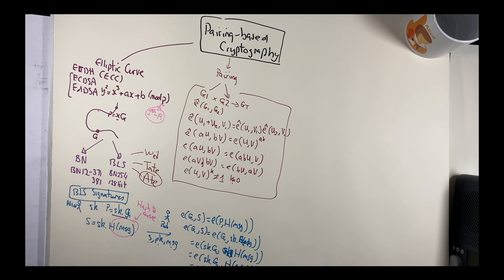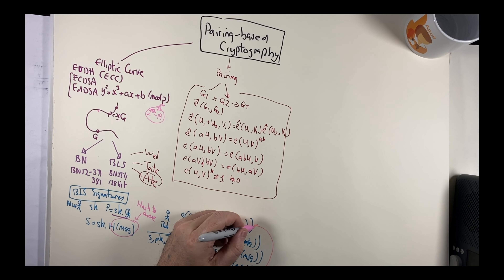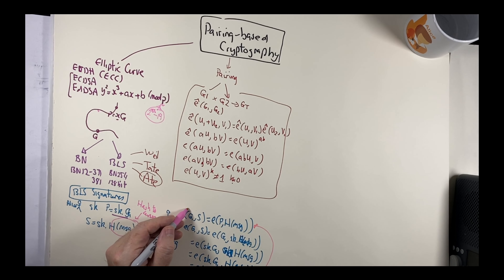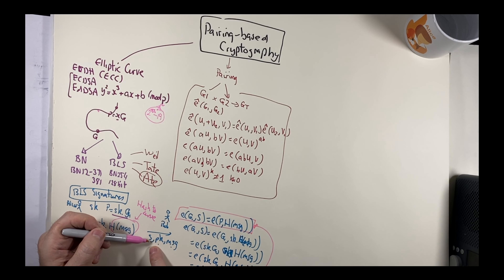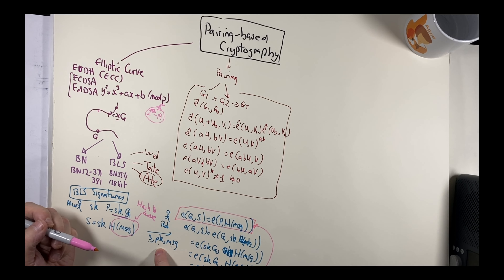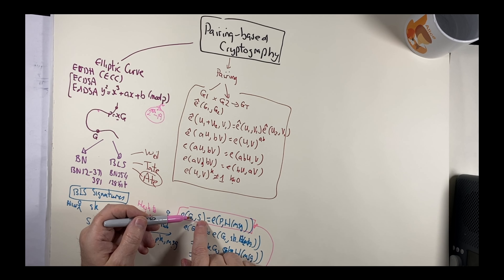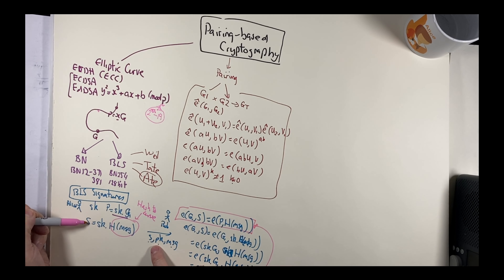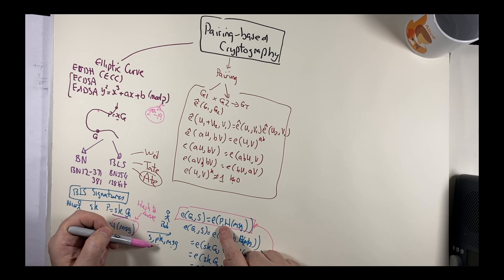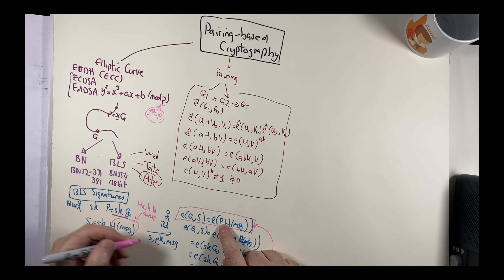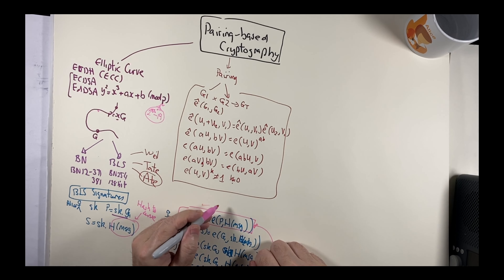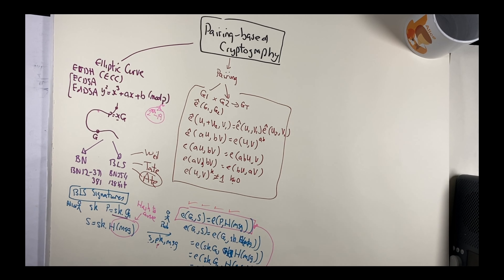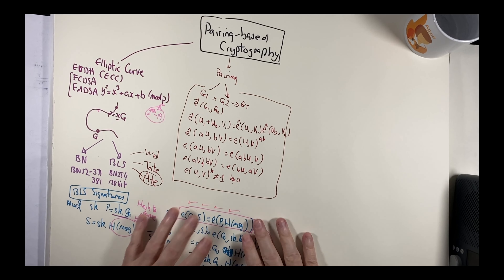Bob can see that the two pairings match. All Bob has to do is take the signature S and base point G1, compute the pairing, then compute the pairing of the public key PK with the hash-to-curve of the message. If they match, Alice has proven she signed the message. This is a BLS signature — very simple, very effective, and it supports aggregation of signatures using addition.